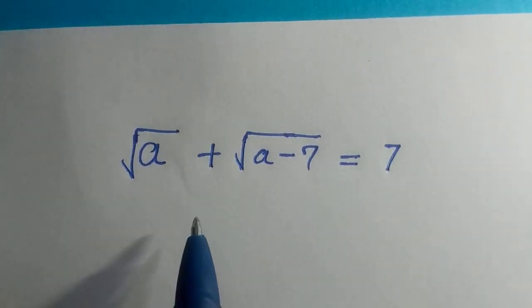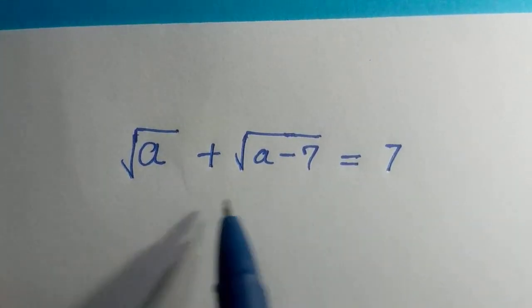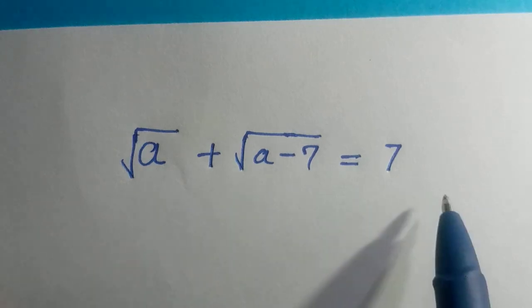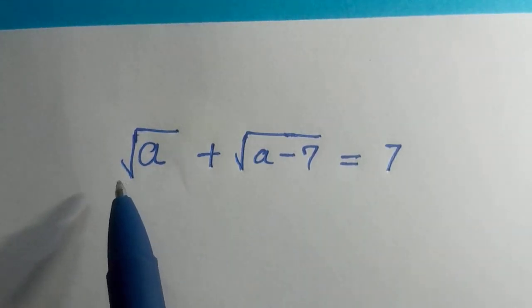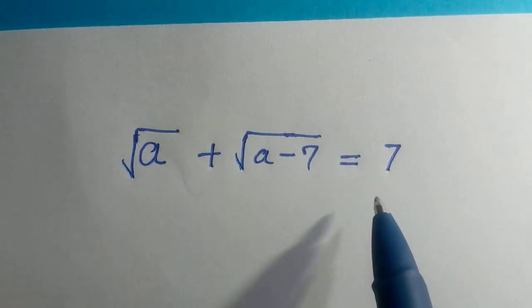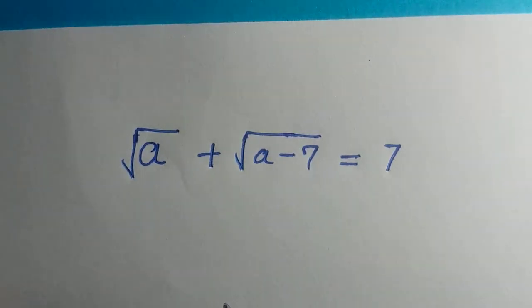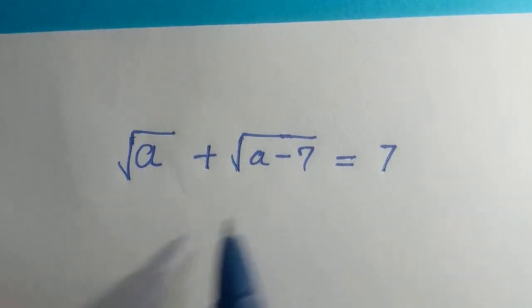So the first thing we are going to do is, we cannot transfer any of these two to the other side and take the square of it, no. So the only thing we can do is we are going to take the square of both sides. Alright, so we take the square of both sides, but before that, I am going to let these to another letter.